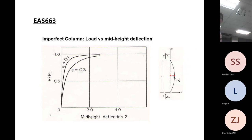The first part to cover today is the Euler formula and the Rankine formula. These are all for a perfect column, which means the column is perfectly straight with no eccentricity. But an imperfect column, which we discussed last week, behaves differently - it bends immediately. The axial load you can apply on an imperfect column is always less than the critical load.